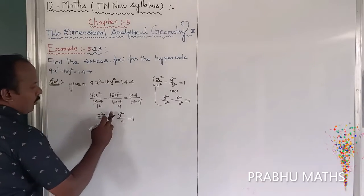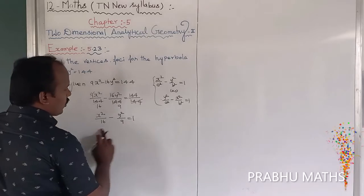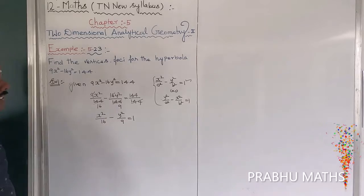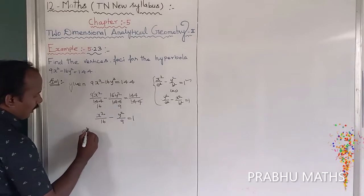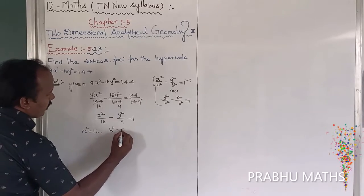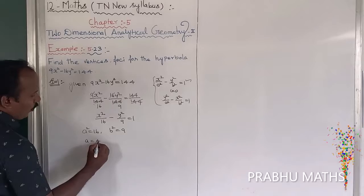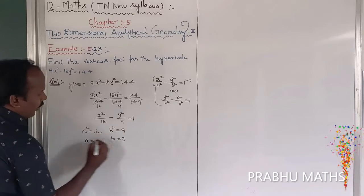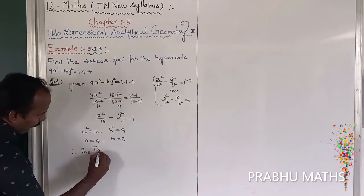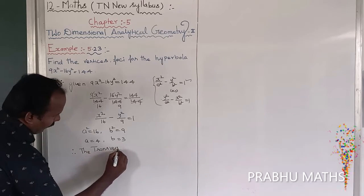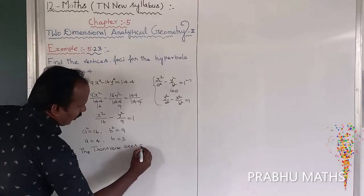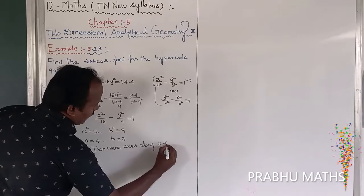This matches the form x squared over a squared minus y squared over b squared equals 1 — the first formation. The transverse axis is along the x-axis. We identify a squared equals 16 and b squared equals 9, so a equals 4 and b equals 3. Therefore the transverse axis is along the x-axis.